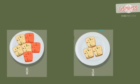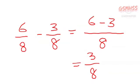Dora have 6 of 8 cookies. And Buji take 3 of 8 cookies. Now, how many cookies does Dora have remaining? We subtract. 6 of 8 minus 3 of 8.